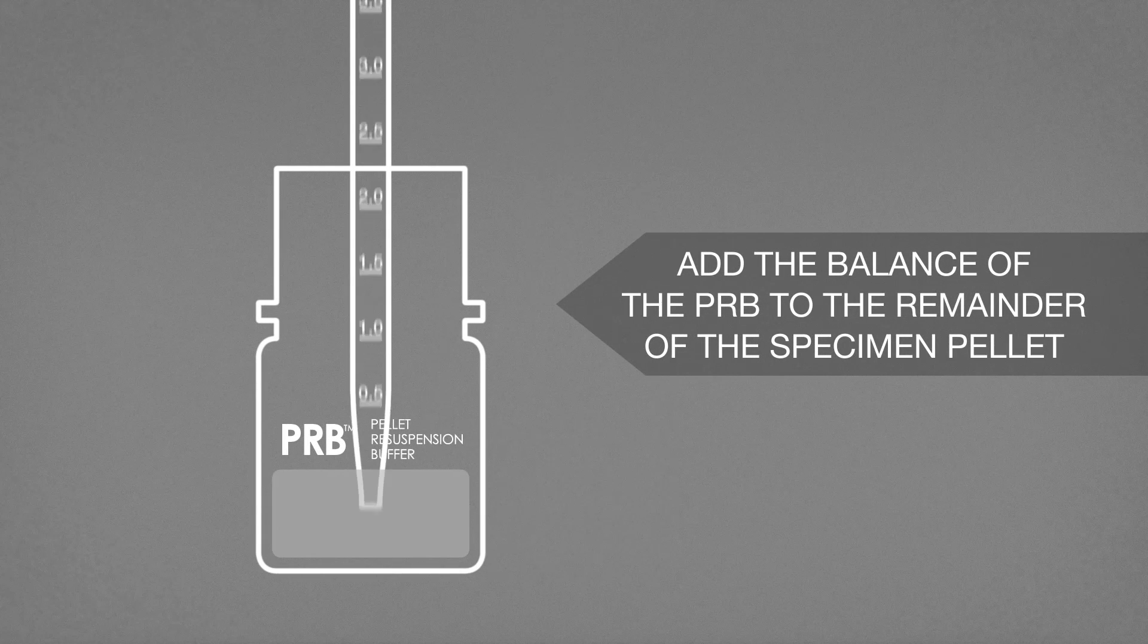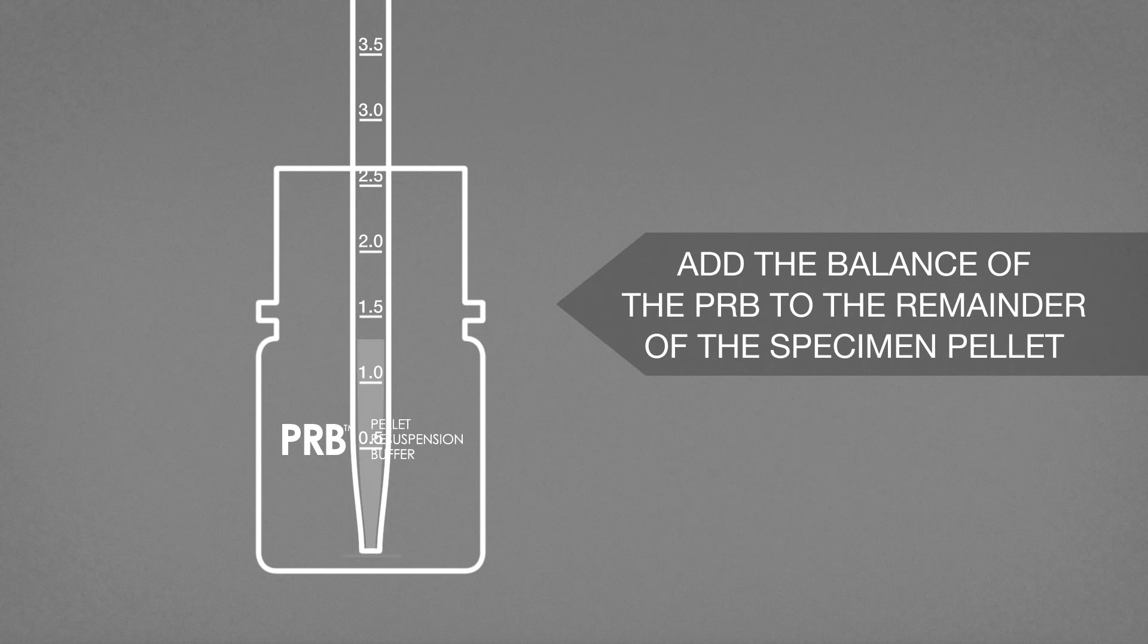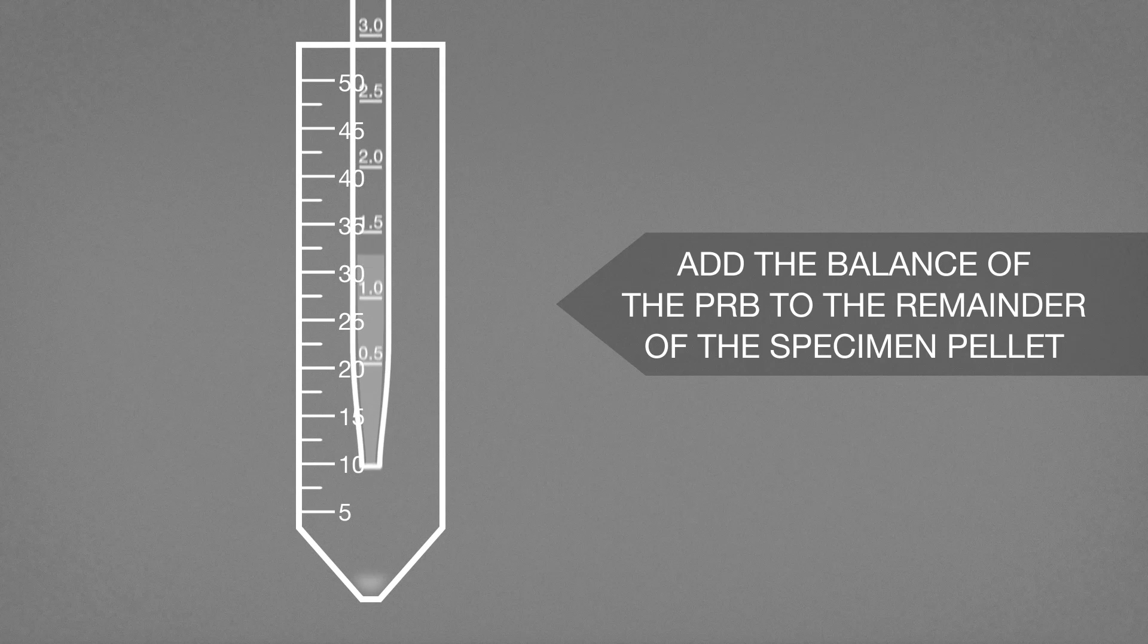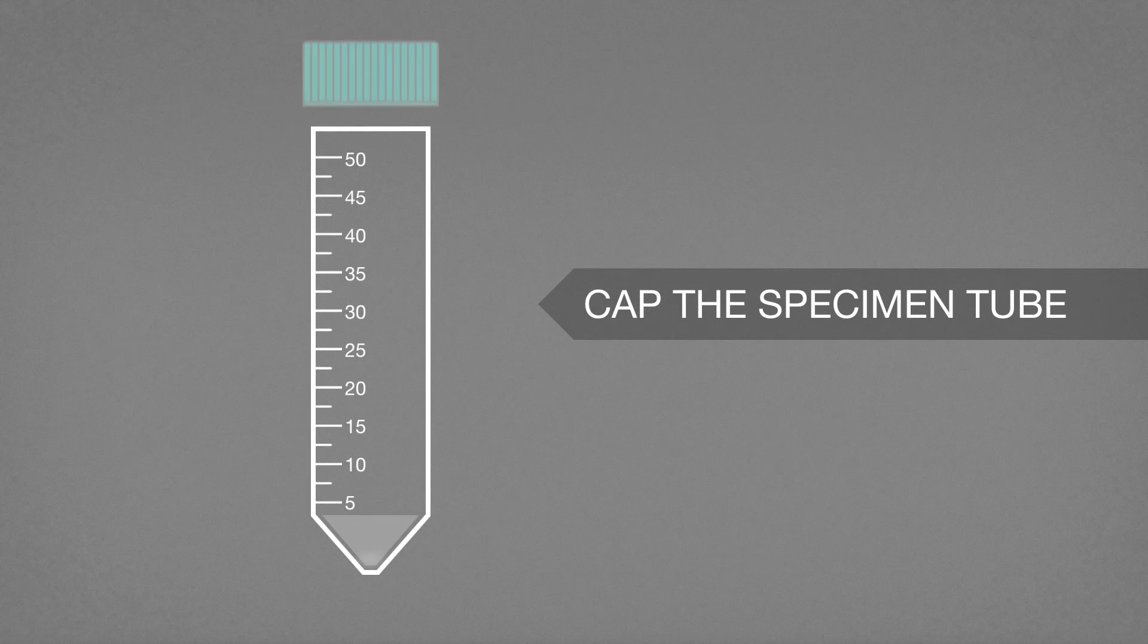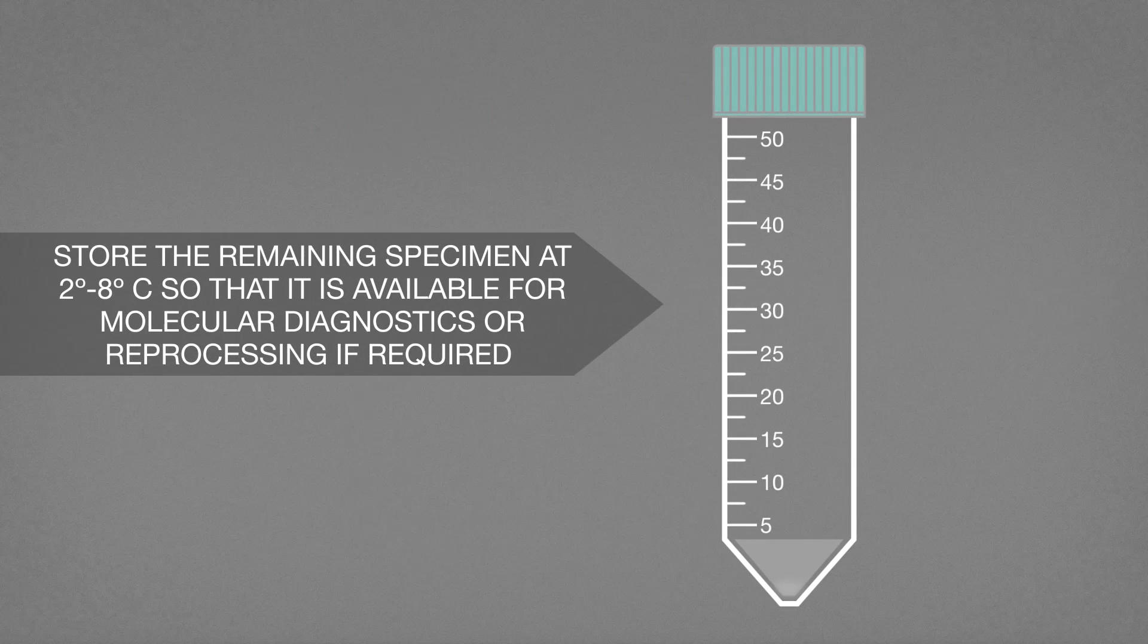Add the balance of the PRB to the remainder of the specimen pellet. Cap the specimen tube. Store the remaining specimen in a smaller tube if necessary at 2 to 8 degrees Celsius so that it is available for molecular diagnostics or reprocessing if required.